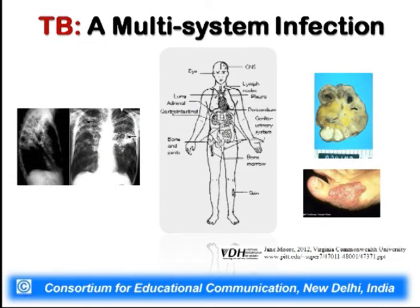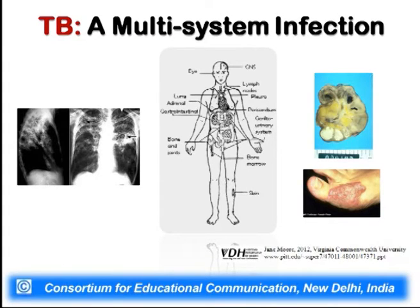Tuberculosis is basically a multi-system infection in which a number of organs get affected. The tuberculosis germs can invade the central nervous system, lymphatic nodes, lungs, adrenal glands, gastrointestinal tract, bones and joints, bone marrow, genitourinary system, and skin. If not treated at the initial level, tuberculosis can act as a multi-system infection inside the body.